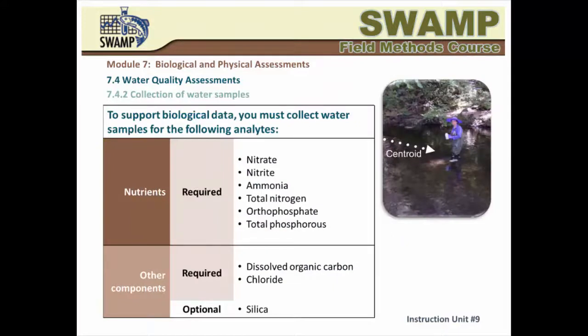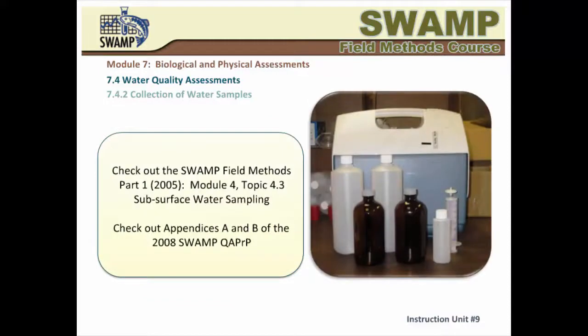You also need to collect a water sample to support algae and BMI data. This sample will be used for analysis of selected nutrients, dissolved organic carbon, and chloride. Sampling and analysis of silica is recommended. Please check the SWAMP Bioassessment SOP and the SWAMP Field Methods Part 1, Module 4, Topic 4.3.1, and Appendices A and B of the 2008 SWAMP QAPRP for further details about collection of water samples.